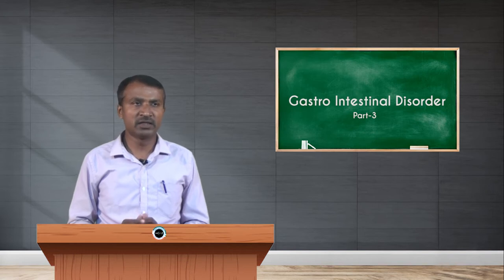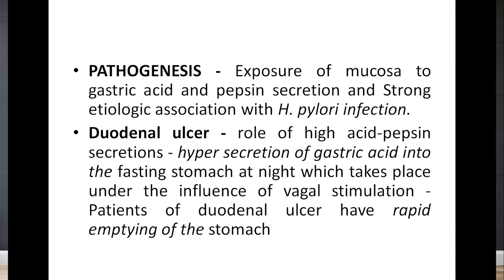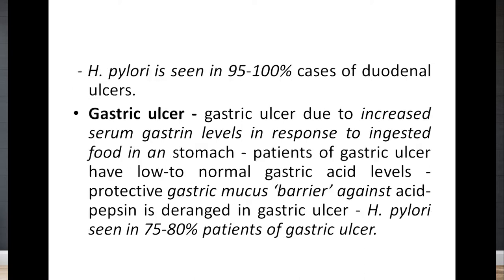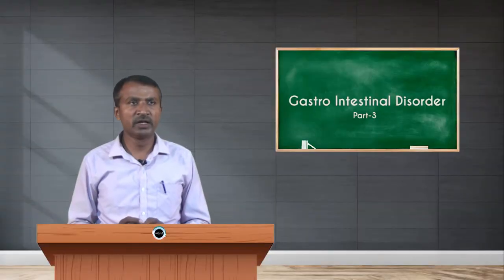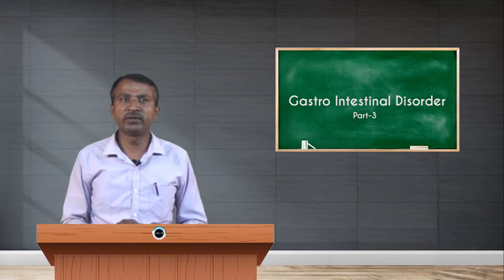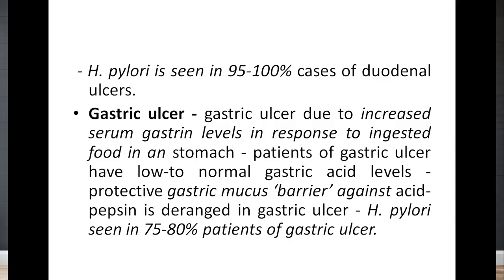When looking at duodenal ulcers, the role of acid pepsin secretions — specifically hypersecretion of gastric acid into the fasting stomach at night — takes place under the influence of vagal stimulation. On an empty stomach, or when there is clearance of the stomach to the duodenum, pain occurs in cases of duodenal ulcers. Patients of duodenal ulcer have rapid emptying of the stomach, and H. pylori is seen in 95 to 100 percent of cases of duodenal ulcers.